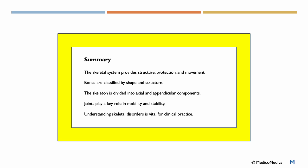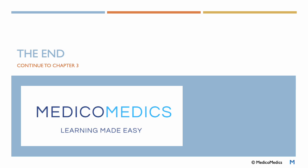In summary then, the skeletal system provides structure, protection, and movement. Bones are classified by shape and structure. The skeleton is divided into axial and appendicular components, where we have 80 bones in the axial and 126 bones in the appendicular. Joints play a key role in mobility and stability. Understanding skeletal disorders is vital for clinical practice. And that's the end of the chapter. Continue now to chapter number three.